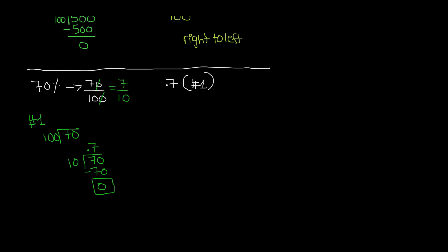For method two with 70 out of 100, you can apply the same simplification and write 7 out of 10. The decimal point in 7 is at the end. Since 10 only has one zero, move the decimal point from right to left once, and you get 0.7 from method two as well.